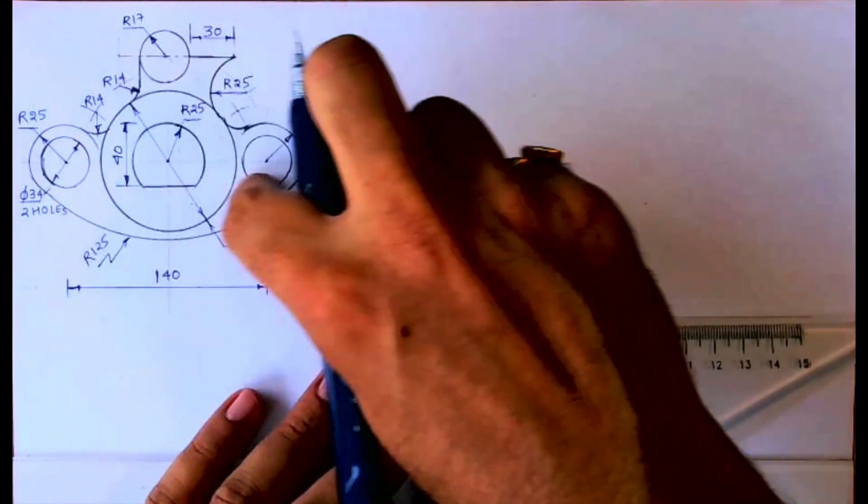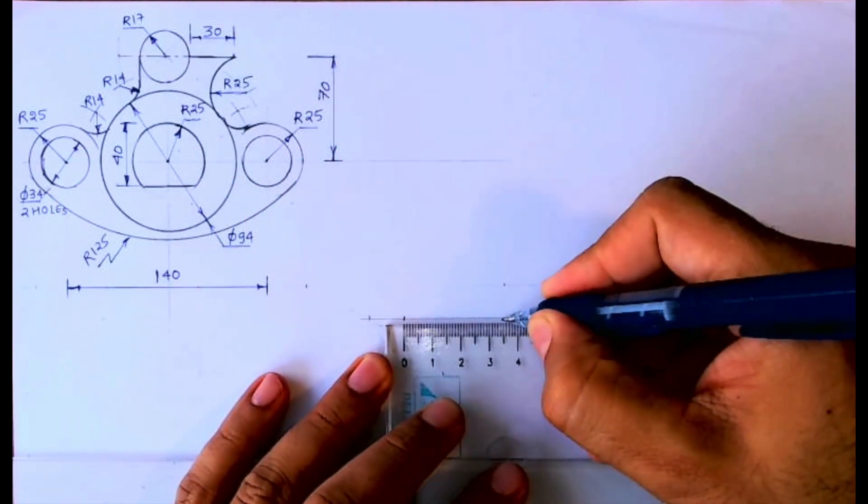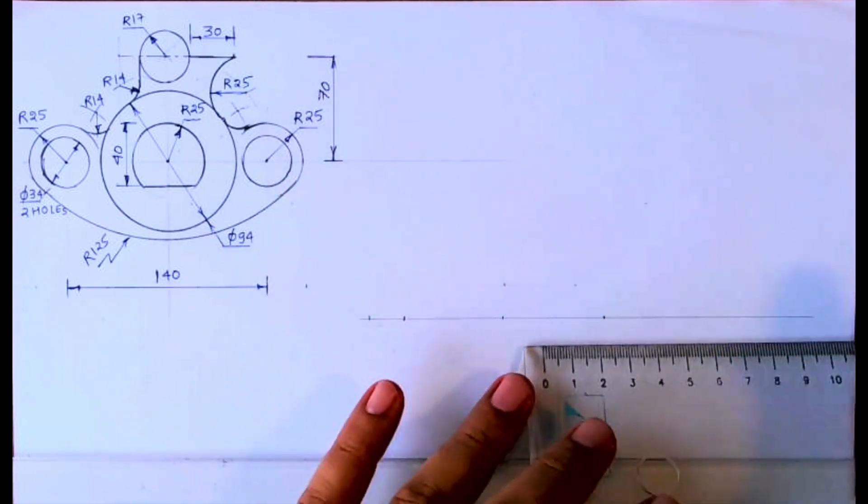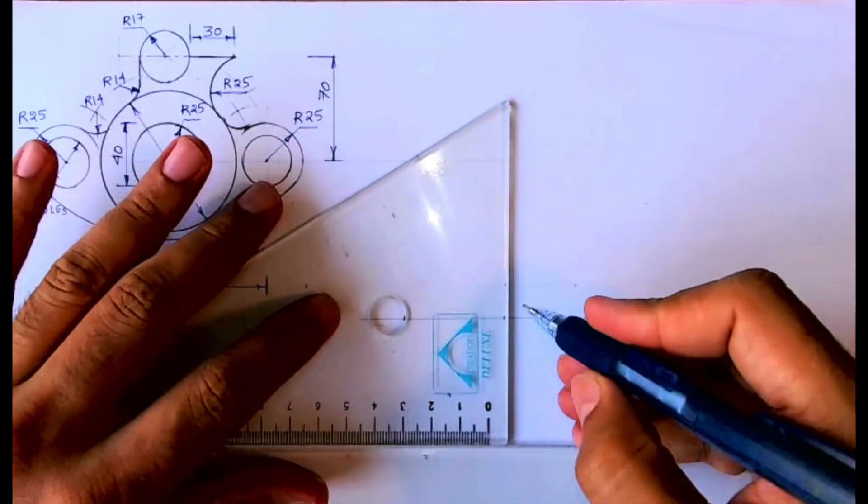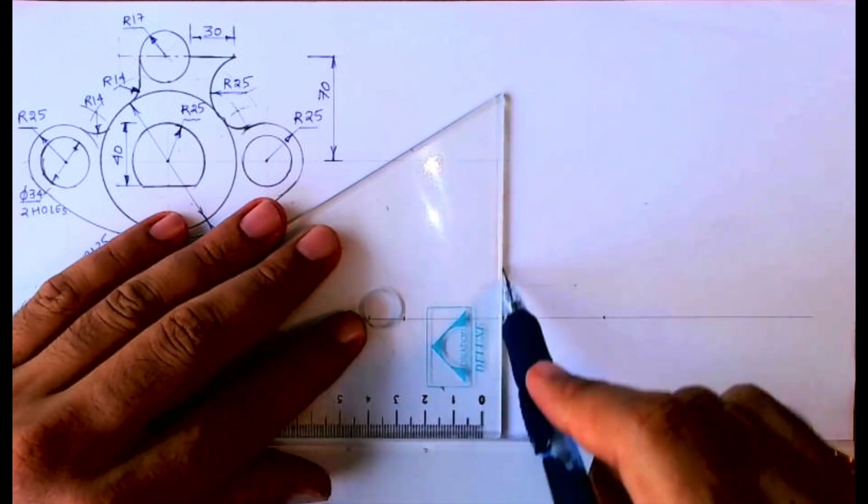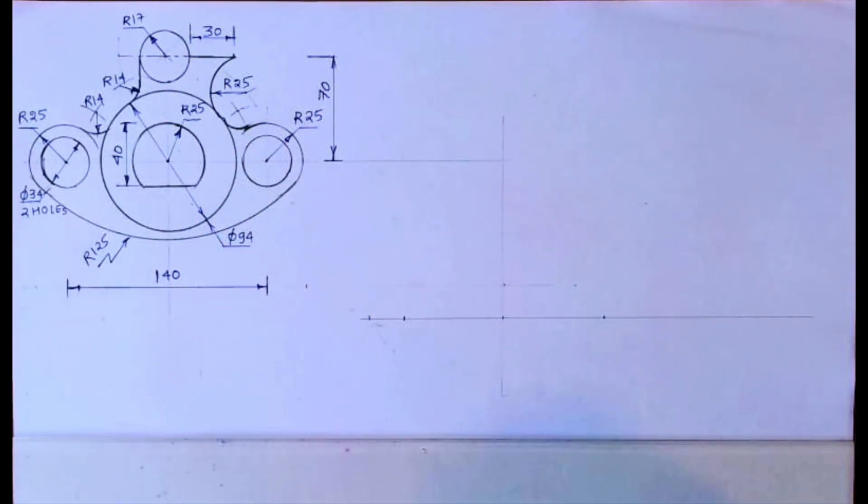Then I'm taking 140. Because of space I'm taking in half scale, but you can do it in full scale. So you draw one vertical line and from there you go up by 70.